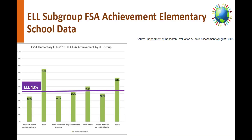This ESSA Elementary ELL subgroup data is a reflection of the opportunity gap some of our ELLs have experienced. 43% of the overall ELL subgroup district-wide, grades 3 to 5, have met proficiency on the 2019 ELA FSA. The Asian, multi-ethnic, and white ELL subgroups exceeded the overall ELL proficiency. On the other hand, the Black or African American, Hispanic or Latino, American Indian or Alaskan Native, and Native Hawaiian or other Pacific Islanders scored lower than the overall ELL subgroup.